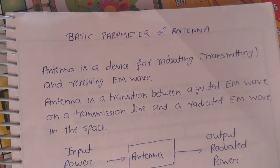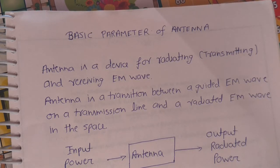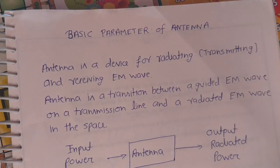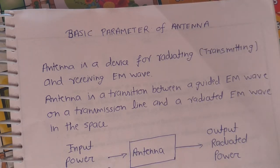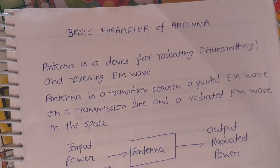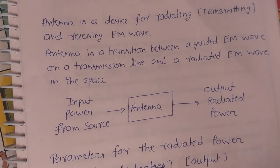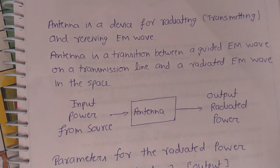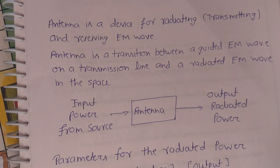An antenna is a device for radiating, transmitting, and receiving electromagnetic waves. It is a transition between a guided EM wave on a transmission line and a radiated EM wave in free space. If you draw the block diagram of an antenna, we have a block representing the antenna where input power is applied from the source, and the antenna gives the output as radiated power into free space.